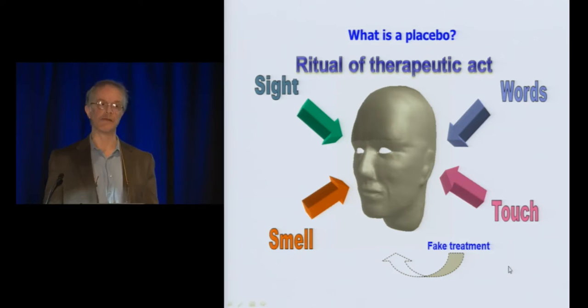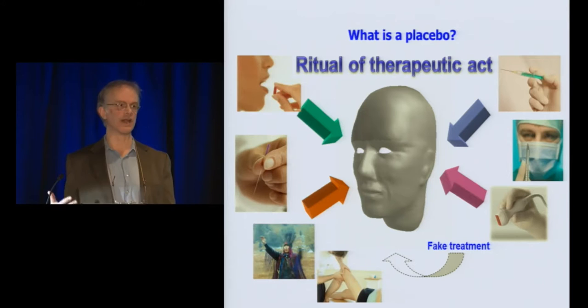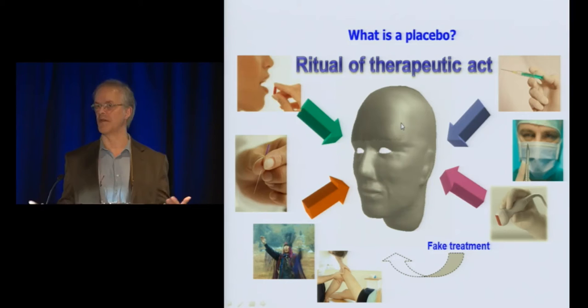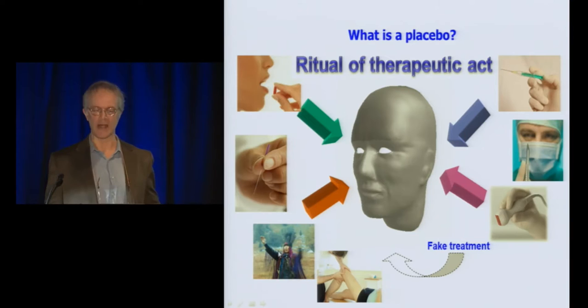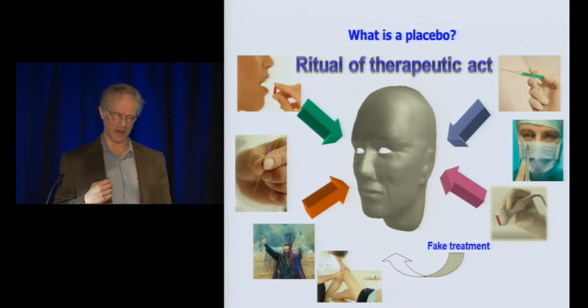In a single sentence, we can call all these sensory and social stimuli the ritual of the therapeutic act. There are many rituals in routine medical practice: the ritual of taking a pill, the ritual of a shot, the ritual of surgery — surgery has a very powerful psychological effect. The ritual of alternative medicine like acupuncture, whose rituals are very complex, the ritual of medical devices, the ritual of physiotherapy, and even the ritual of shamans — because shamanic rituals are not very different from the rituals of mainstream medicine.